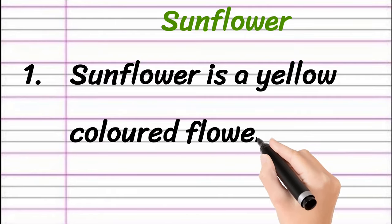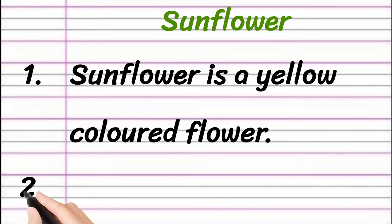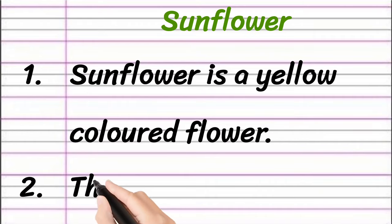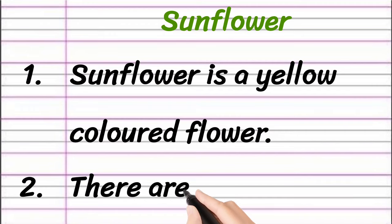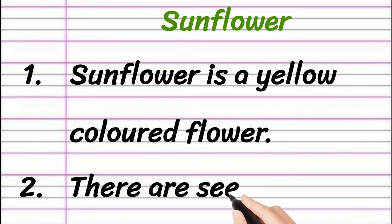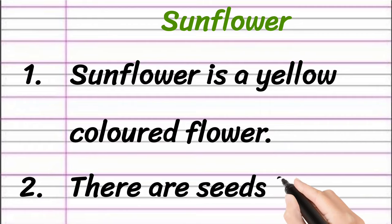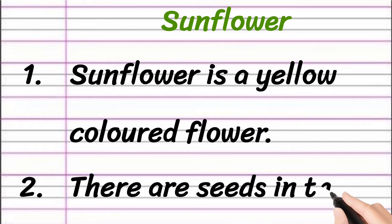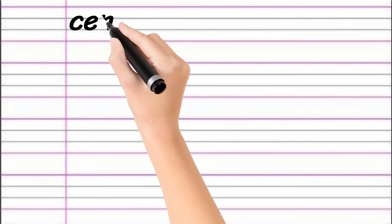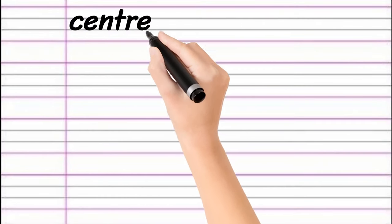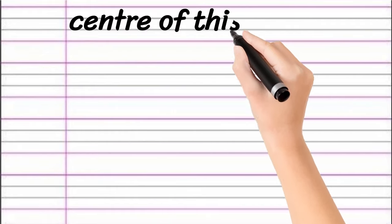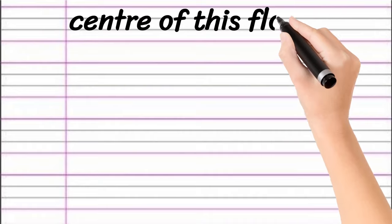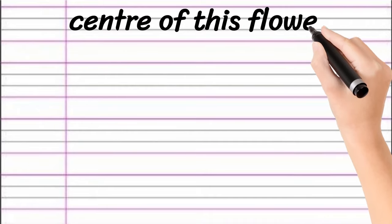Sunflower is a yellow colored flower. There are seeds in the center of this flower.